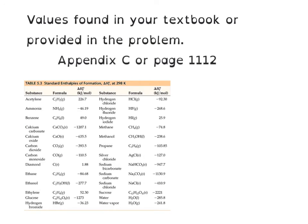These values are found in your textbook or will be provided in the problem. If you look in your textbook in Appendix C on page 1112, you'll see a table similar to what I've attached here. You can see that ammonia has a delta H value of negative 46.19, so that means that 46.19 kilojoules per one mole are released when you form ammonia.